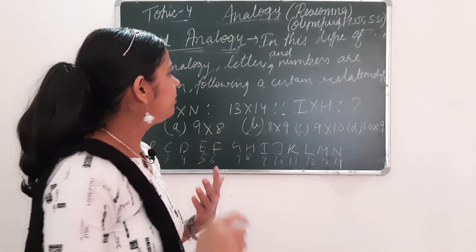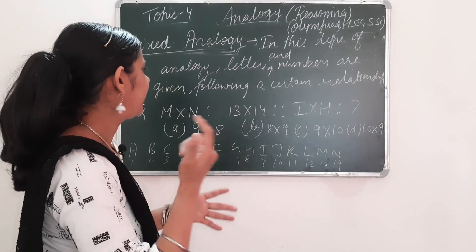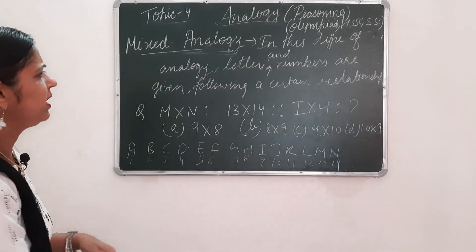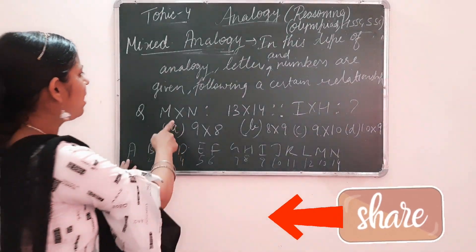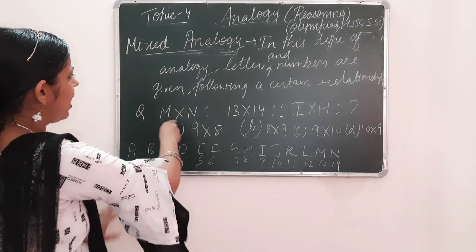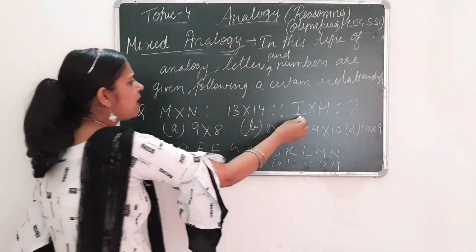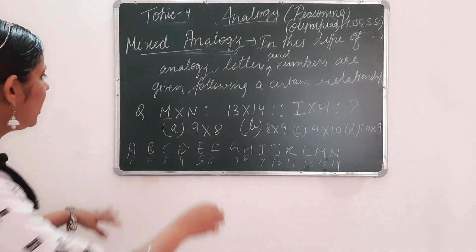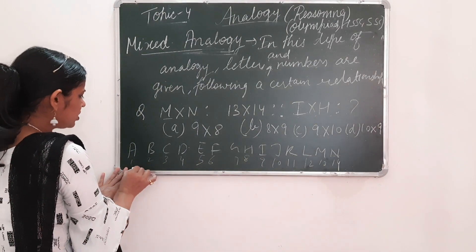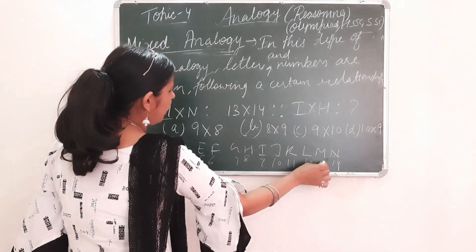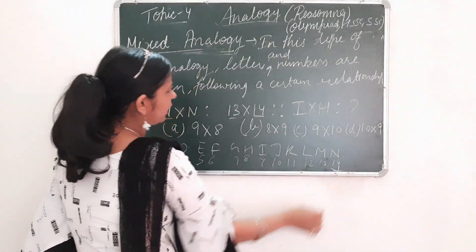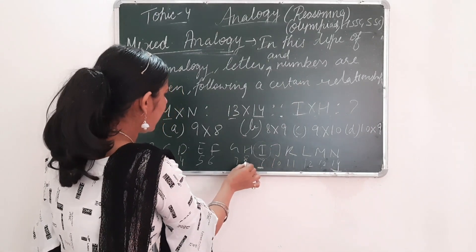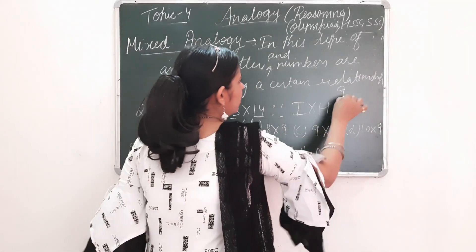Next is mixed analogy. In mixed analogy, letters and numbers are given, and there is a certain relationship. You have to follow and observe that relationship, then apply the same relationship to the other pair. For example: M × N is to 13 × 14. If we can write M × N as 13 × 14, then what can we write I × H as? M's position is 13 and N's position is 14. I's position is 9 and H's position is 8. So we can write it as 9 × 8.